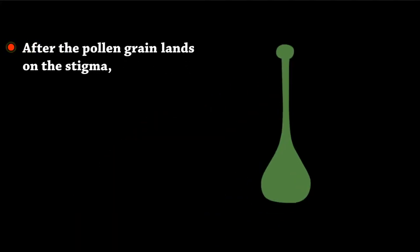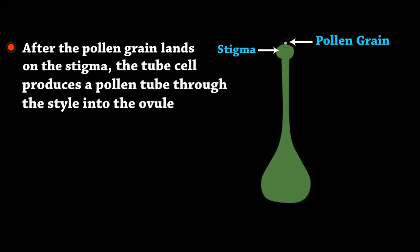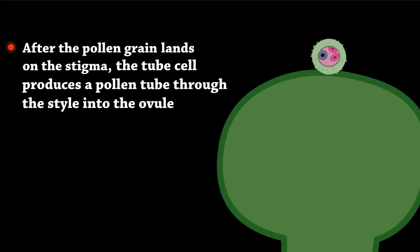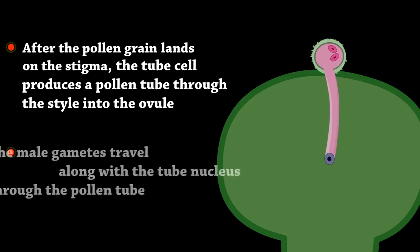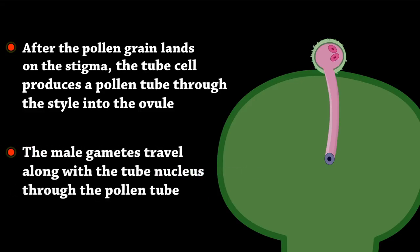After the pollen grain lands on the stigma, the tube cell produces a pollen tube through the style into the ovule. The male gametes travel along with the tube nucleus through the pollen tube.